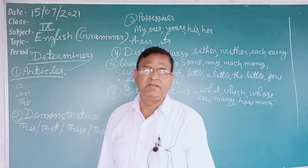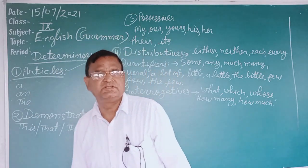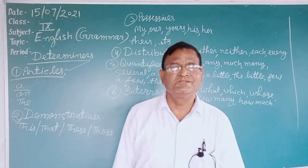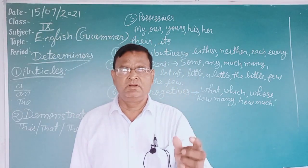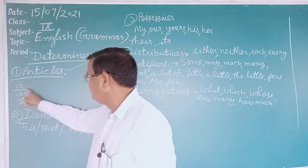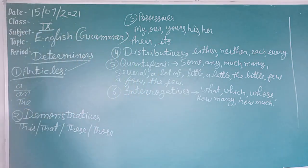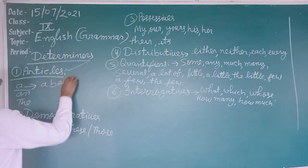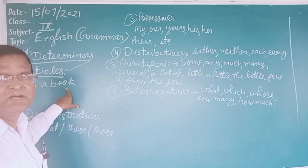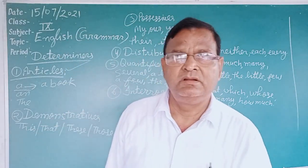In the previous video, I told you that 'a', 'an', and 'the' — these three words are known as articles in English grammar. 'A' is used before a consonant-sounded word, singular number, and countable noun. Just like: a book, a pen, a car, a fan, a table, a door, etc.